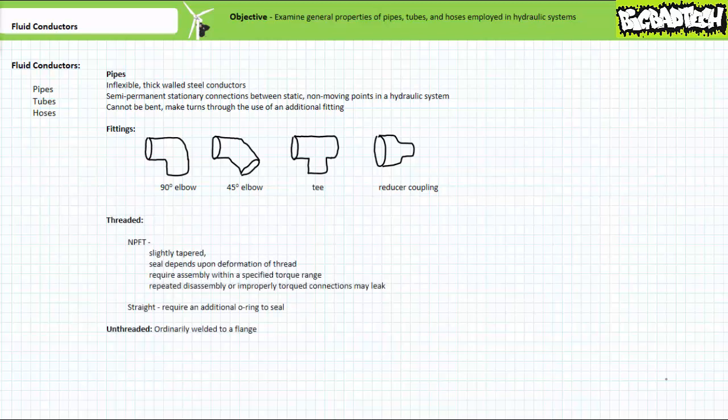Pipes can be threaded or unthreaded. A threaded pipe for fluid power applications ordinarily makes use of NPFT or straight threads. NPFT stands for National Pipe Taper Fuel, which are slightly tapered and depend upon slight deformation of the thread to provide a seal. For this reason, NPFT threads require assembly within a specified torque range to provide a proper seal.